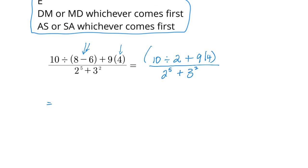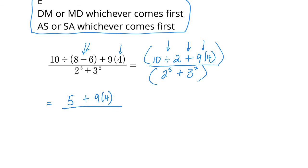I'm going to treat the whole top as if it's in brackets, and same with the bottom — do the whole top first, then the whole bottom. Up top I have a divide, an add, and a multiply, so I do either divide or multiply whichever comes first. I do this divide: ten divided by two is five, plus nine times four. On the bottom there are exponents: two to the fifth is thirty-two, plus three squared is nine.